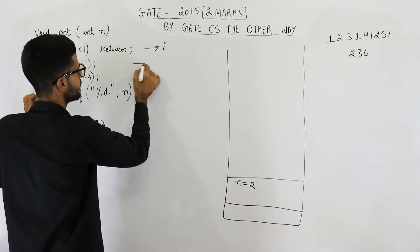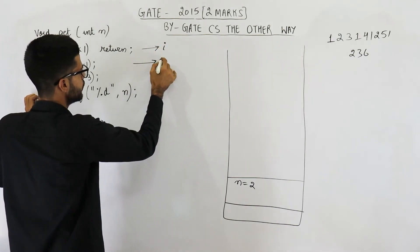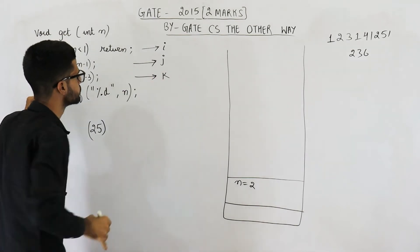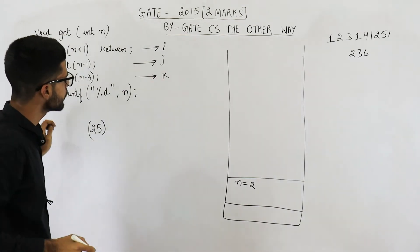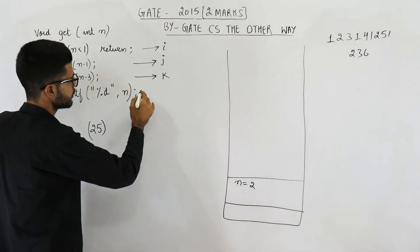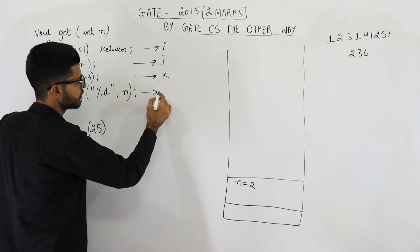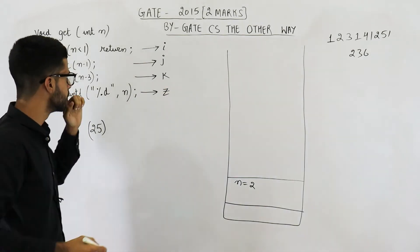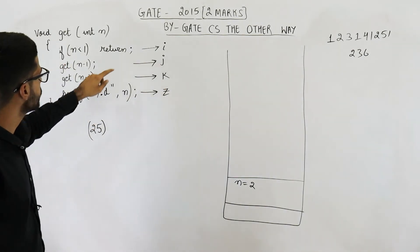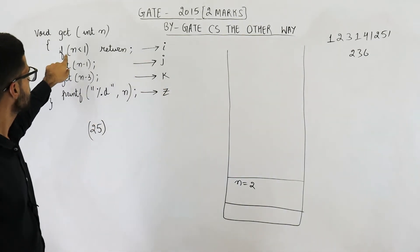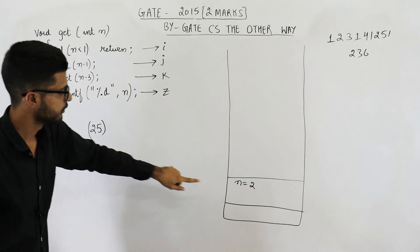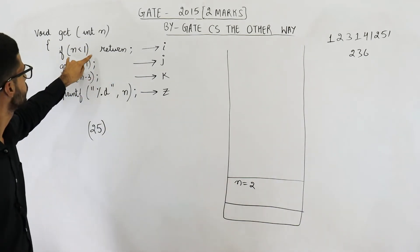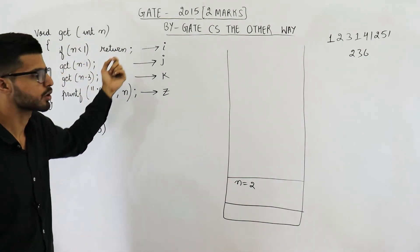And say this is line z. Now line i is executed for this function and you can see 2 is not less than 1, so you will not return.